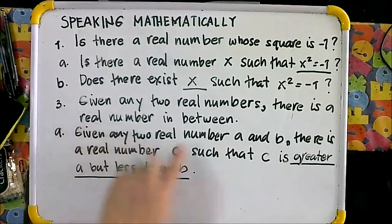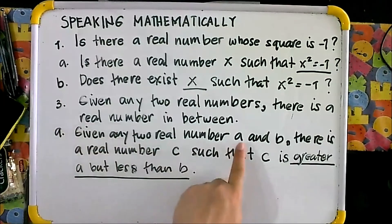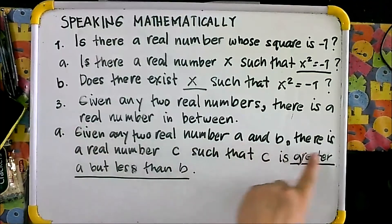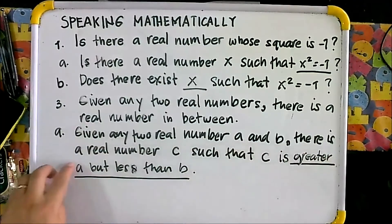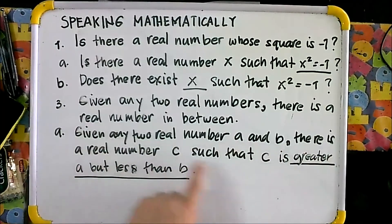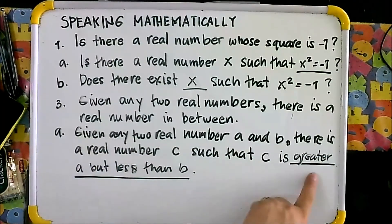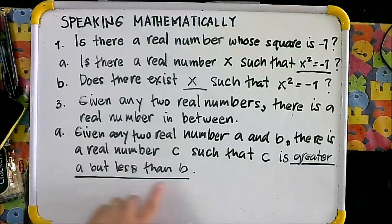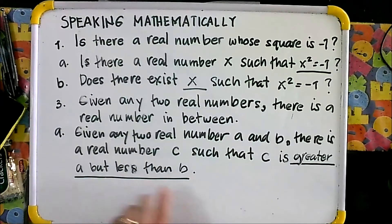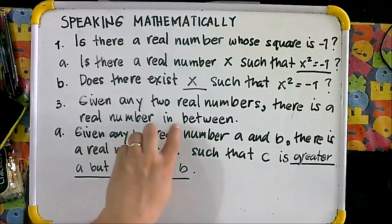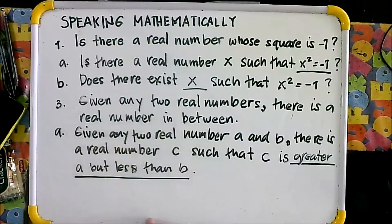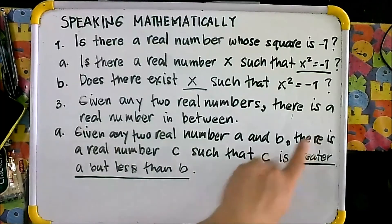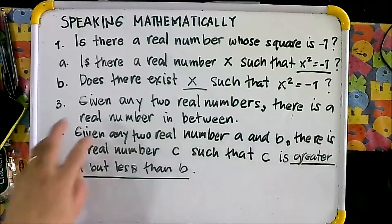So, given any two real numbers A and B, there is a real number C such that C is greater than A but less than B — meaning C is in between A and B.